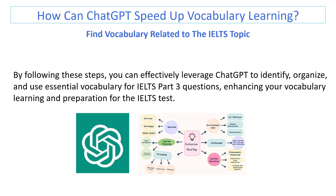Pause the video here and take a closer look at the map. Can you develop sentences from these grouped words? Write some sentences you develop in the comments below. You can also generate vocabulary for other topics — Google these topics, transform the list into mind maps, then develop sentences from the words on the mind maps. By following these steps, you can effectively leverage ChatGPT to identify, organize, and use essential vocabulary for IELTS Part 3 questions, enhancing your vocabulary learning and preparation for the test.